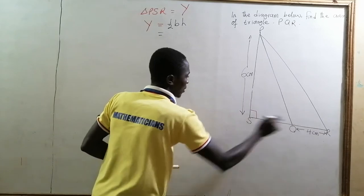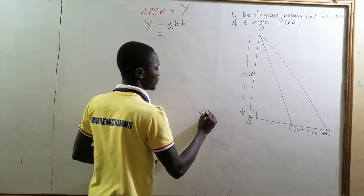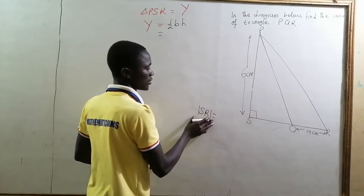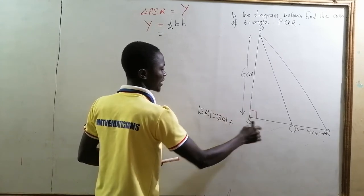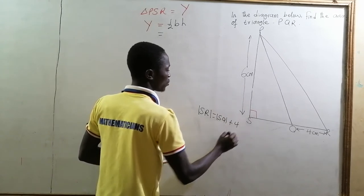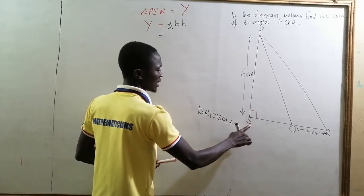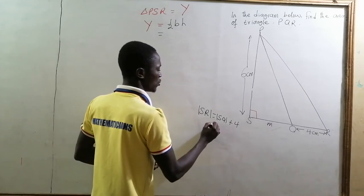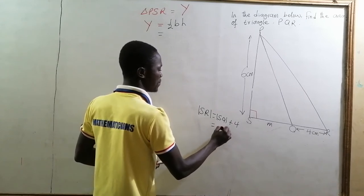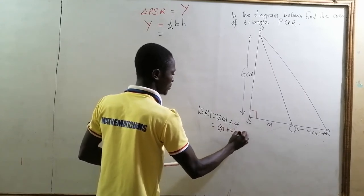So if we take SR as the base length, SR is equal to SQ plus QR, and QR is 4. So if we represent SQ by, say, M, we are going to have SR to be M plus 4 in centimeters.